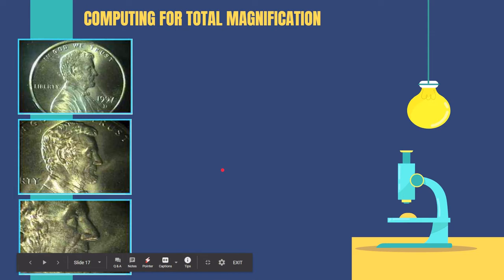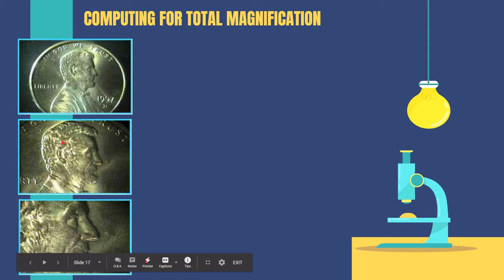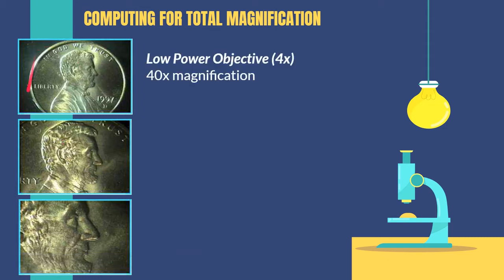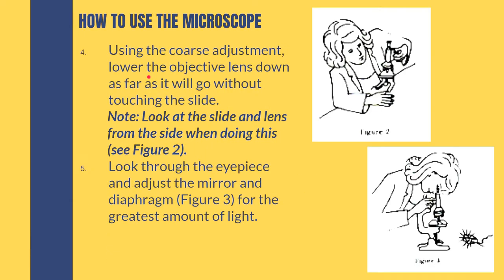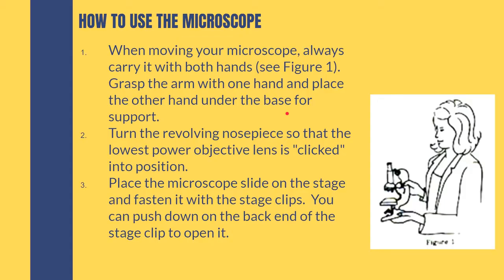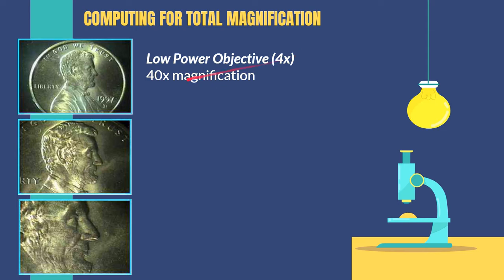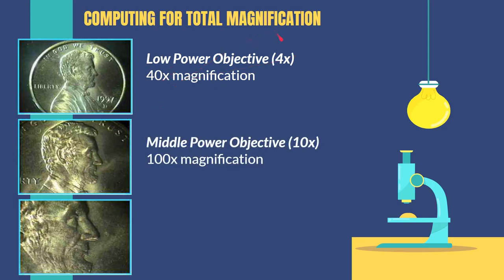Using the microscope is not enough — you also need to know how to compute total magnification. We have three types of objective lenses showing different views of the specimen. The low power objective always has a 4x magnification. The middle power objective allows us to zoom closer. If you're using a 10x ocular lens with a low power objective, you get a total of 40x magnification.